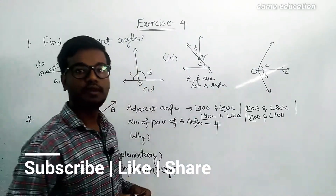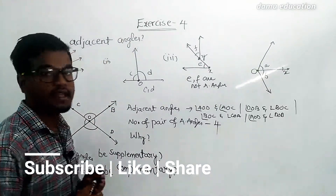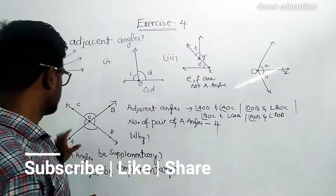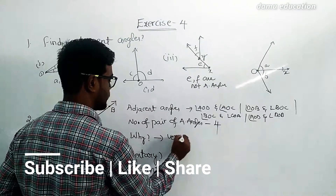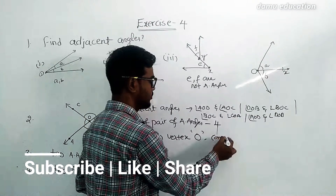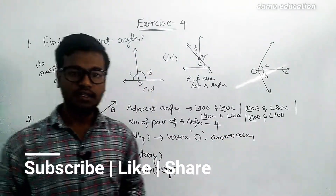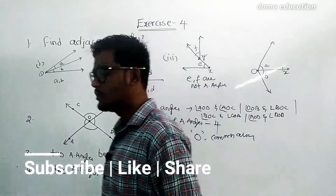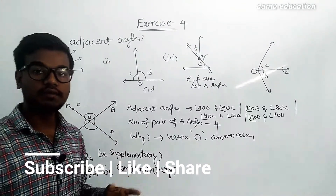So why are they called adjacent pairs of angles? Because they have a common vertex O and common arms between the two angles.